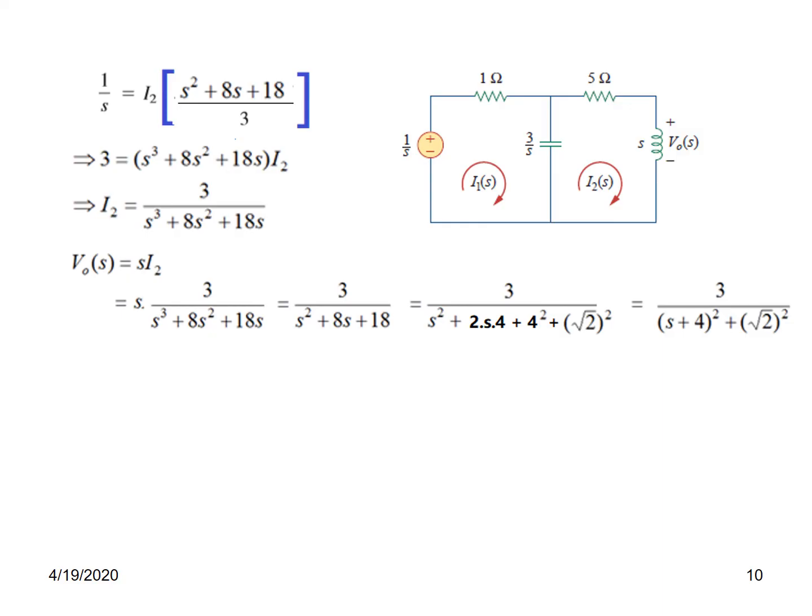You can see from here, 8s can be written as 2s plus 4, and then we can write 4 squared which will make 16. 16 gone from 18, we are left with 2. We can write 2 as square root 2 squared. Now this one is whole squared: (s plus 4) squared plus square root 2 squared.